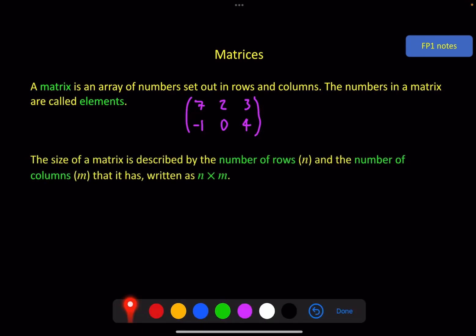And we use the rows and columns for a different purpose as well. We use them to describe the size of a matrix. So the number of rows, in this case, we've got two rows, and the number of columns, in this case, three columns. We write that as an n by m matrix. So the one I've got here in pink is a 2 by 3 matrix, because it has two rows and three columns.